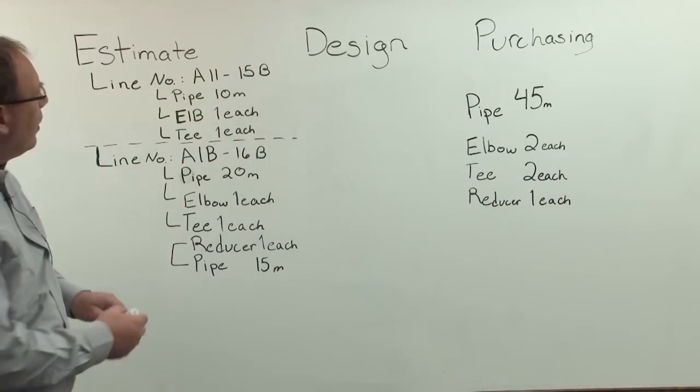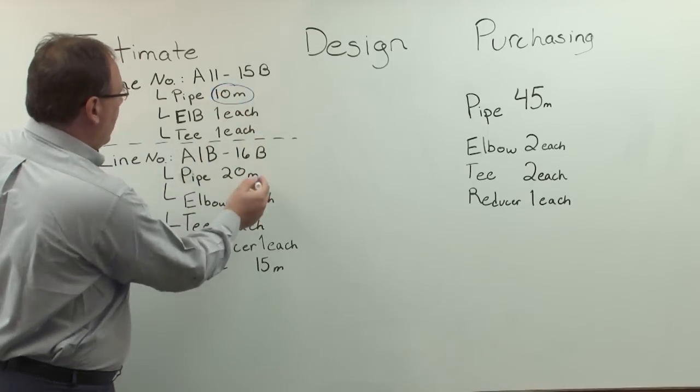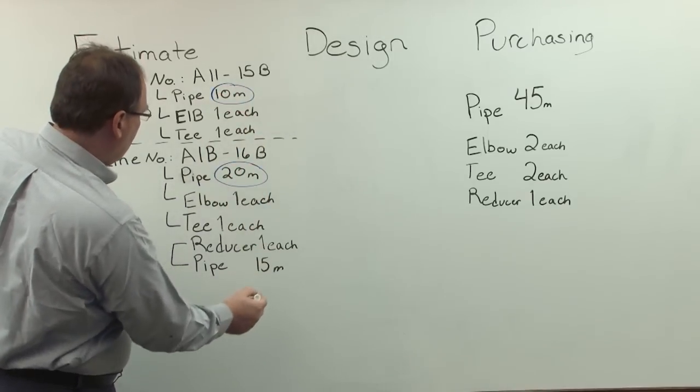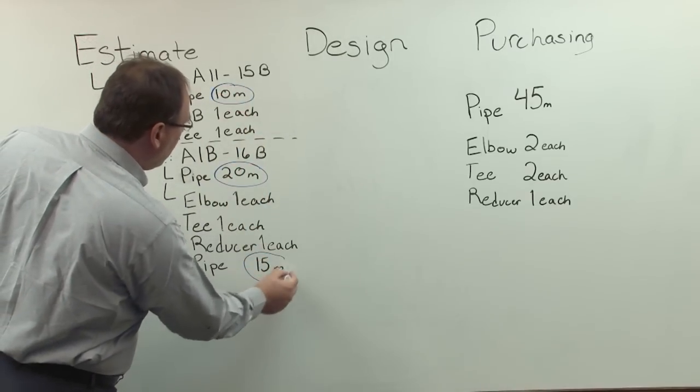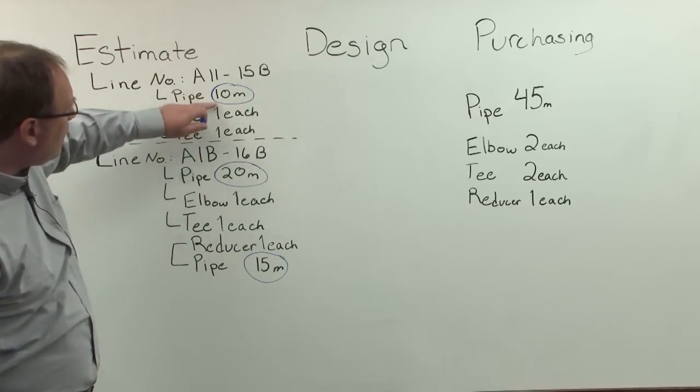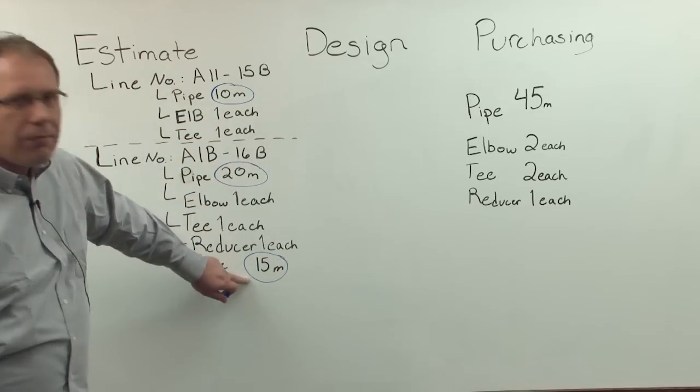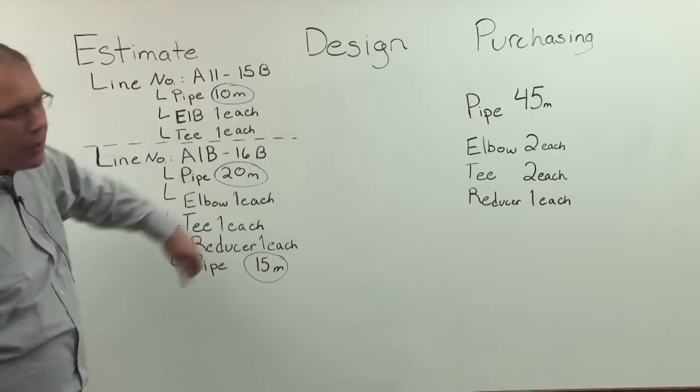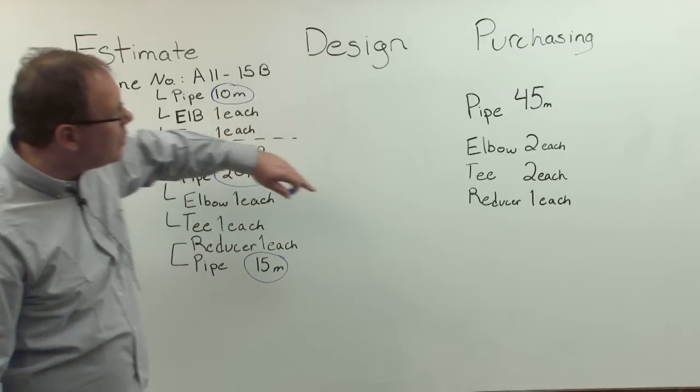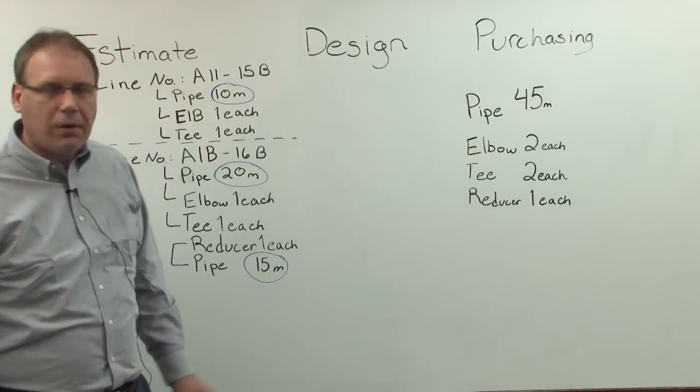Now let's take the pipe. I have 10 meters here, I have 20 meters here, and I have 15 meters here. So that's then 10, 30, 45 meters. So we summarize all this, the system is calculating this, and then we need 45 meters. Right?